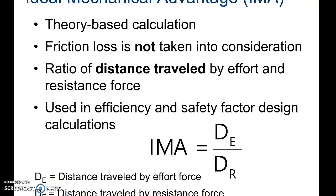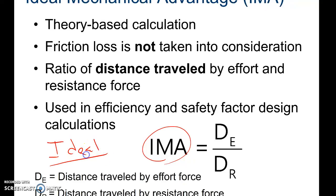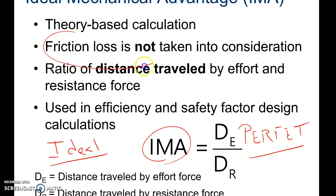There are two different types of mechanical advantages. The first is called ideal mechanical advantage. When you think of the term ideal, you think about something that's perfect. The perfect machine does not take friction into consideration. To calculate it, we take the ratio of the distance traveled by the effort force divided by the distance traveled by the resistance force.